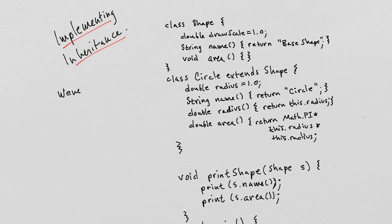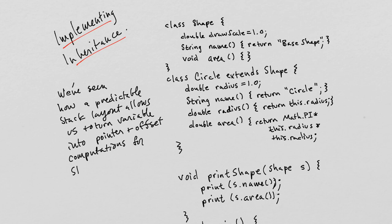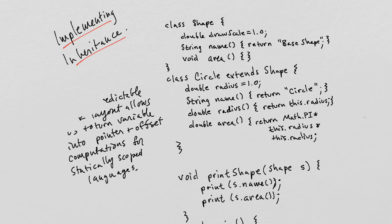Quick recap: we've seen how a predictable stack layout allows us to turn variable references into pointer-plus-offset computations for statically scoped languages. This is very useful because a well-thought-out stack allowed us to forget about variable names — we didn't have to go looking for a variable, we just offset into the stack frame to access the variable at the offset we knew it would be at.